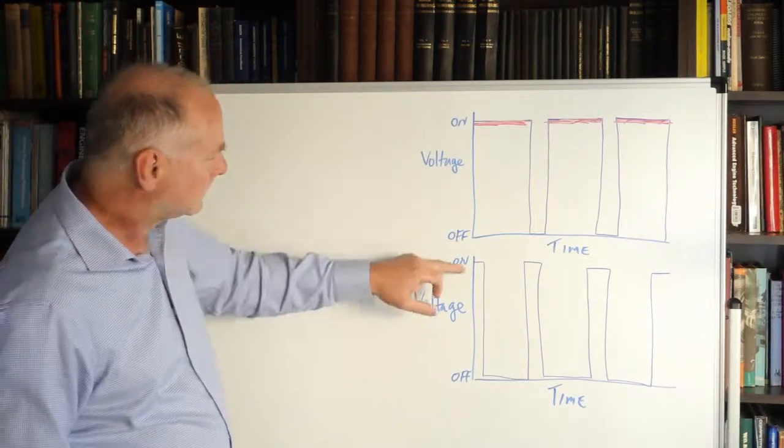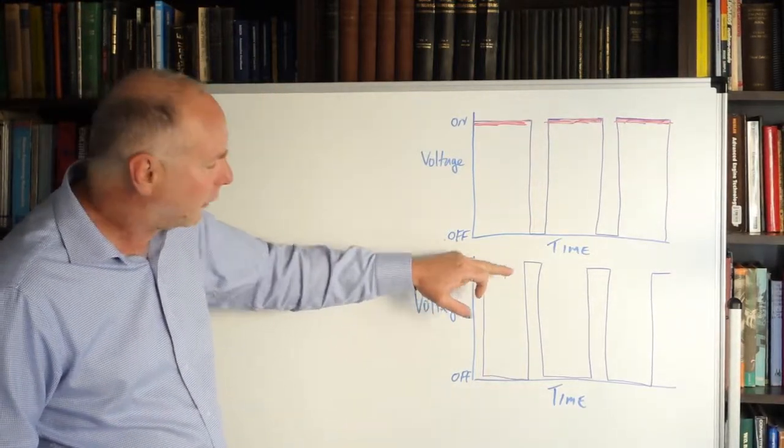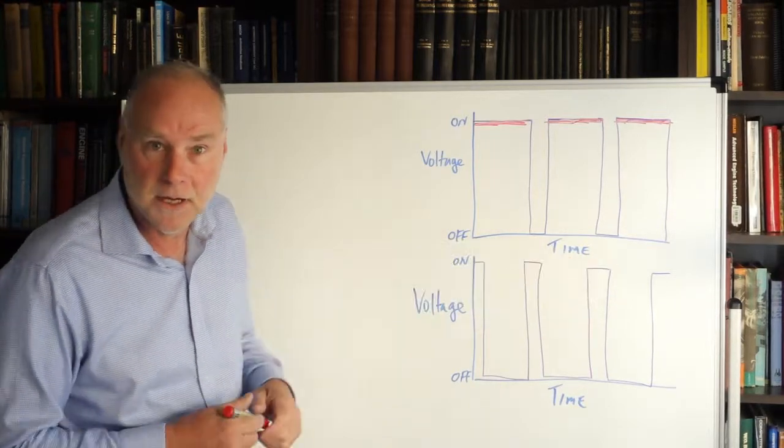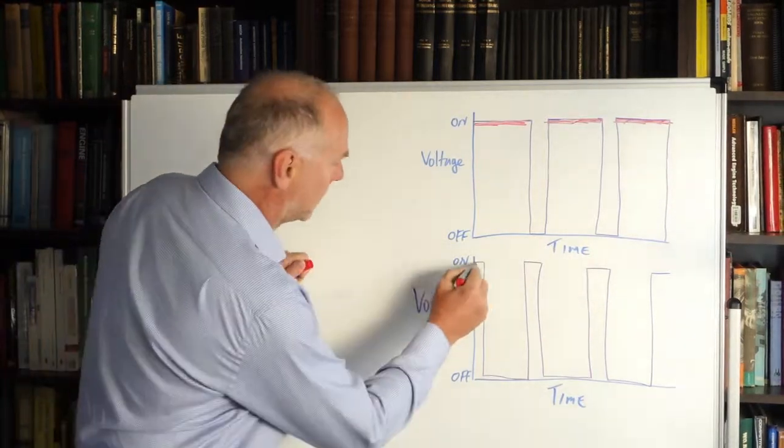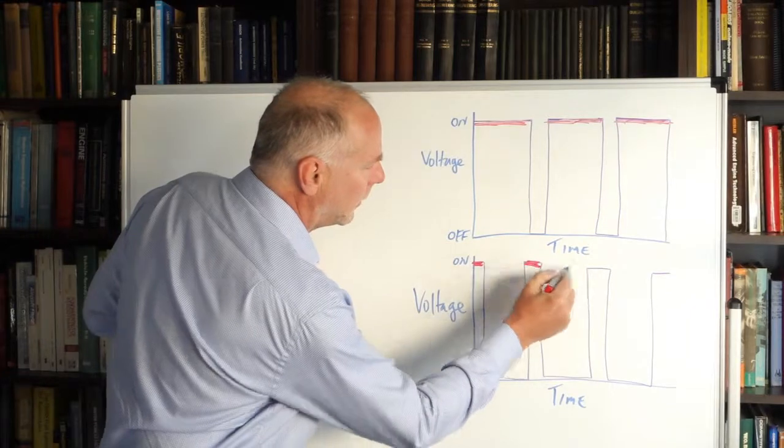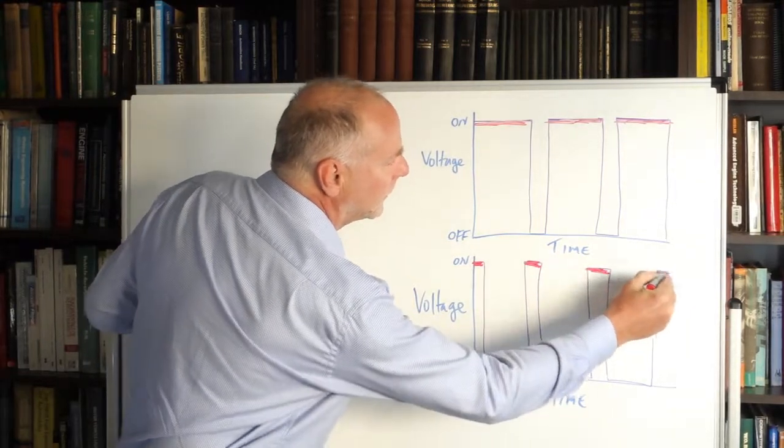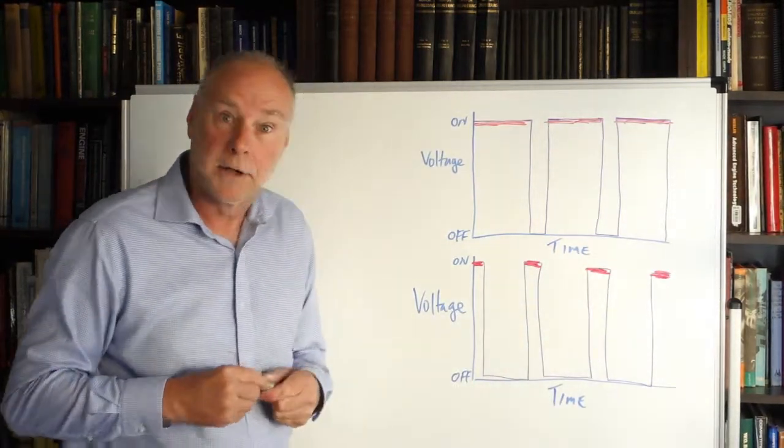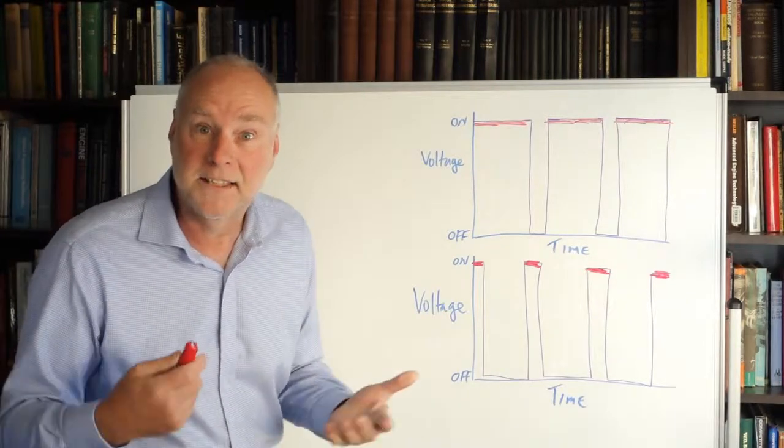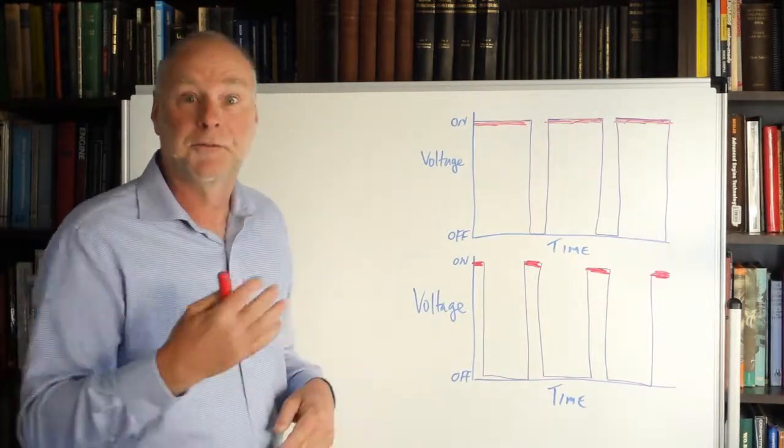Now let's look at the next graph. Here we can see the on times are much shorter. Let me highlight the on times. Now you can see the on times are probably only 10% of the off times.